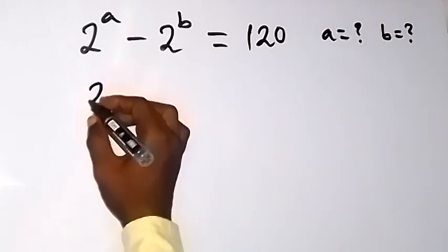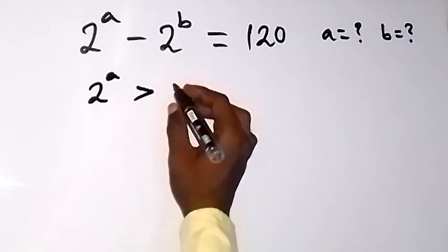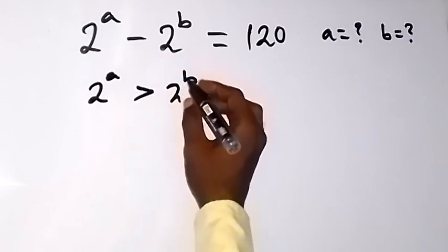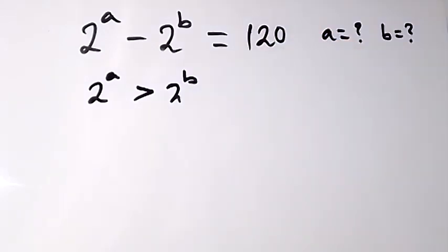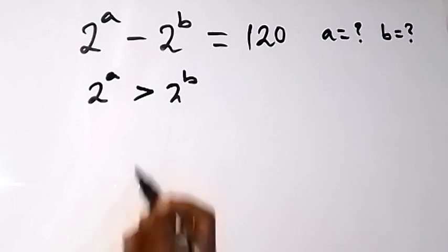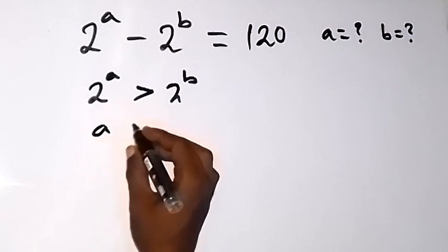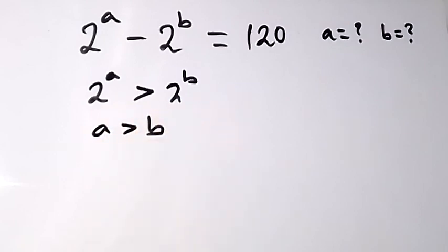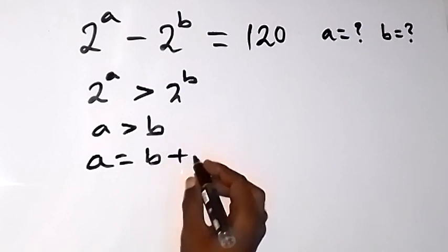We can see that 2 raised to power a is greater than 2 raised to power b for us to have a positive number here. That means the first number is greater than the second number. We have the same base here, which implies that a is greater than b, and if a is greater than b we can say that a will be equal to b plus a certain number.